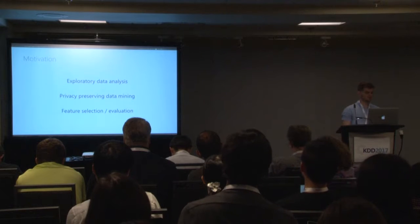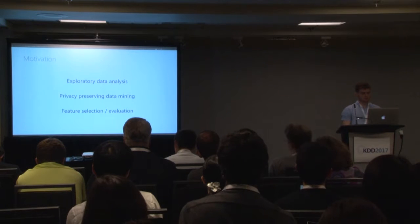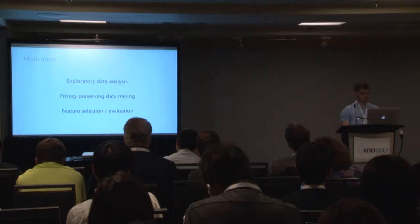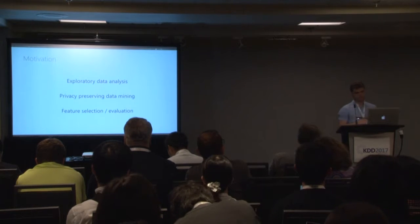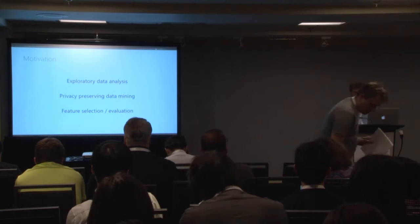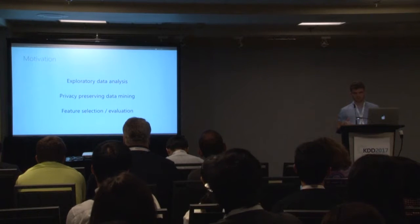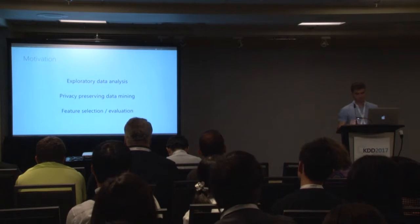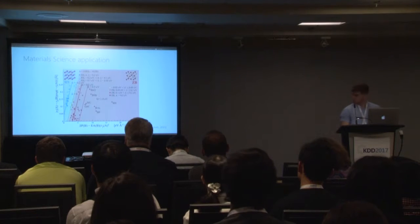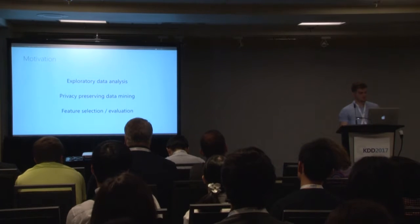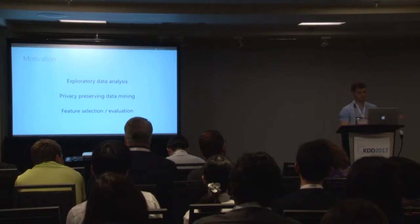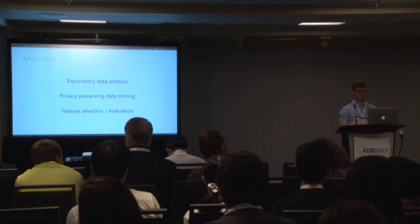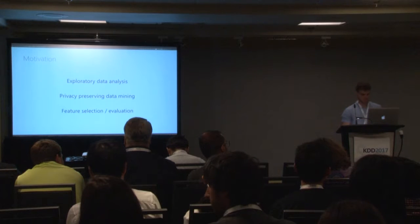Another useful application is feature selection: we want to feed nice features to a learning algorithm. But it's also useful for feature evaluation, where instead of trying different algorithms to see what accuracy we get — and always getting bad accuracy — we go one step back and try to see if our features are good. So we ask: is there a function from these features to the target?